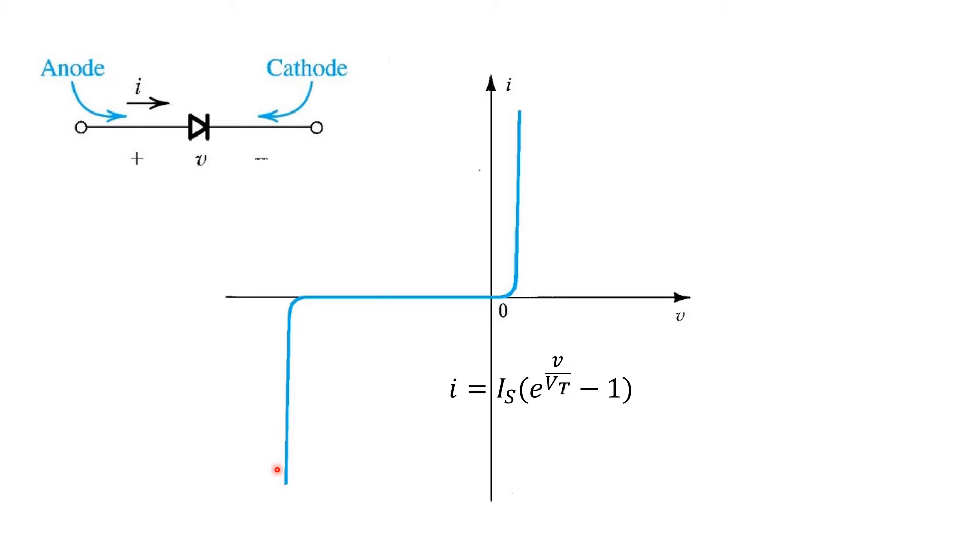One is avalanche breakdown, whereby the electric field across the diode's depletion region is so large that free carriers are accelerated very rapidly, and collisions in the crystalline structure of the semiconductor result in more free carriers being produced, which in turn are accelerated and produce an avalanche effect, resulting in a large reverse current flowing.